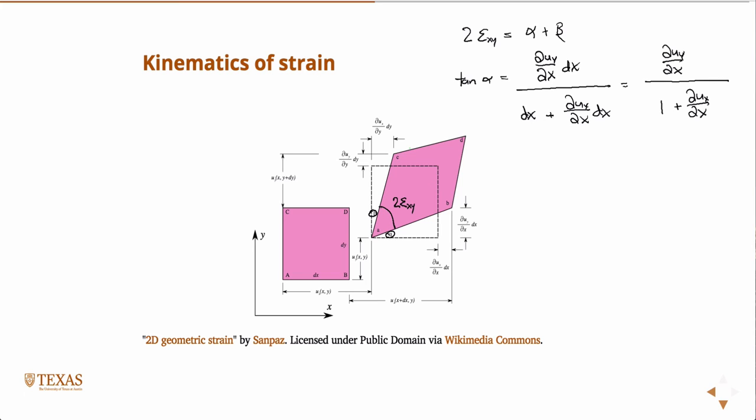So then for small displacement gradients, partial u x partial x is going to be much less than 1. So then in the denominator here we have 1 plus something that's much, much less than 1. That's approximately 1. And so then also for small alpha, the tangent of alpha is approximately alpha. So then our equation becomes, since the tangent of alpha is approximately alpha, that's just alpha equals partial u y partial x over 1, under those two assumptions. So then alpha equals partial u y partial x.